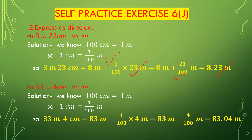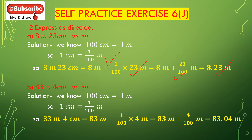Part B — 83 meters 4 centimeters as meters. We have to convert meter-centimeters to meters, specifically converting centimeters to meters. We know 100 centimeters is 1 meter, so 1 centimeter will be 1 divided by 100 meters.